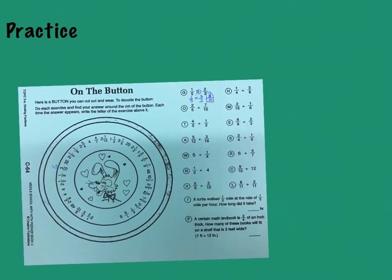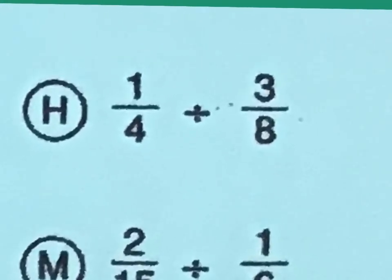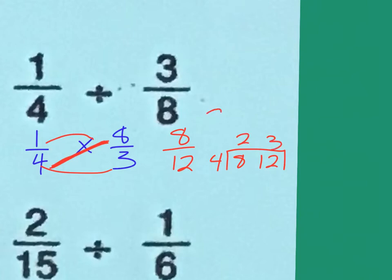So, let's go on to H. Let's do H. H says one-fourth divided by three-eighths. So, I'm going to go one-fourth. Keep it. Change it. Flip it. Now, you can probably, some of you that are really good at identifying multiplication tables, you can see that these numbers right here, they have a common factor. So, you could simplify here. Or, you can just simplify after you multiply. One times eight is eight. Four times three is twelve.